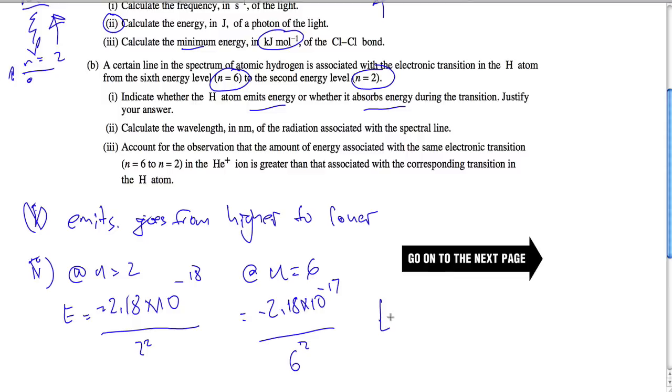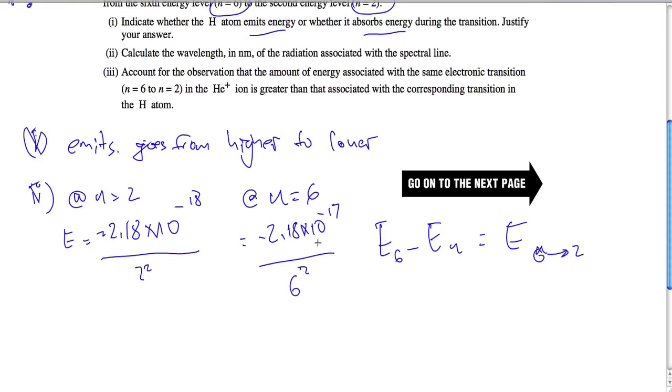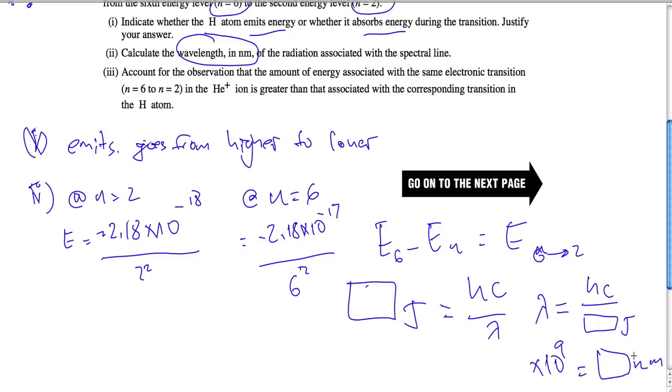Then what you're going to do is subtract the energy at 6 minus the energy at 2 from both of these values, and you're going to get the energy associated with the 6 to 2 transition. Once you get this value in joules, you're going to plug that into the hc over lambda equation. You're going to know that wavelength equals hc divided by whatever answer in joules you got, and you're going to multiply by 10 to the 9th because they want the answer in nanometers.